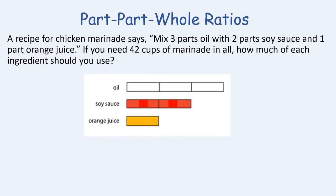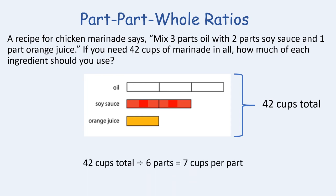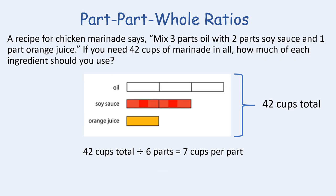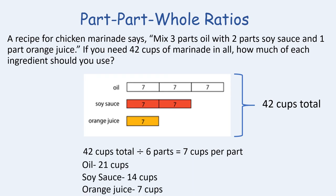Let's try another tape diagram example. A recipe for chicken marinade calls for three parts oil, two parts soy sauce, and one part orange juice. If you need 42 cups of marinade in all, how much of each ingredient do you use? The tape diagram has six parts total. 42 divided by 6 means each part represents seven cups. Therefore you need 21 cups of oil, 14 cups of soy sauce, and 7 cups of orange juice.